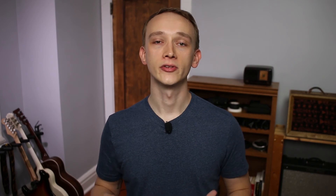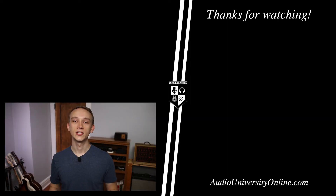Other devices are designed with a frequency response tailored to a specific application. For example, the frequency response of the Shure Beta 52 microphone is specifically engineered for recording kick drum. It intentionally over-represents some frequencies while under-representing others.